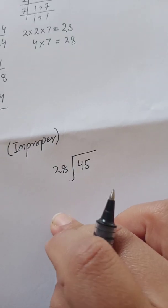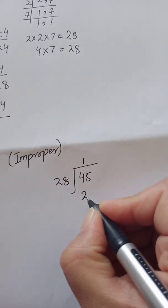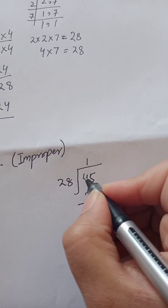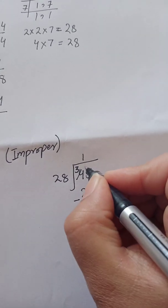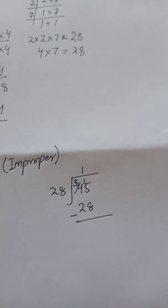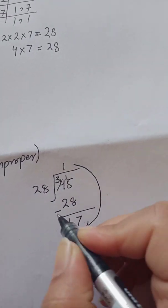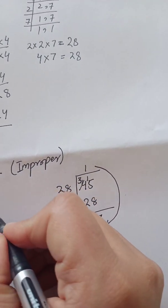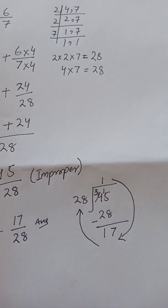Mixed fraction banane ke liye: twenty-eight ko do times multiply karein toh 45 se bada chala jayega, isliye one time hi lenge. One times twenty-eight = 28. Minus karenge: eight cannot be subtracted from five, so we borrow from next column — four will become three, five will become fifteen. Fifteen minus eight = seven. Using the clock method: answer is 1 whole 17 upon 28. This will be your answer, students.